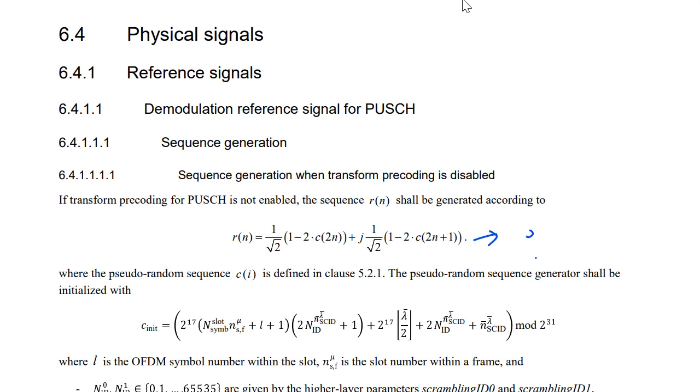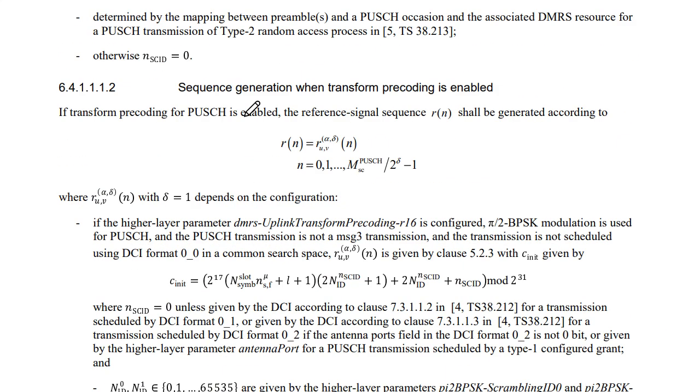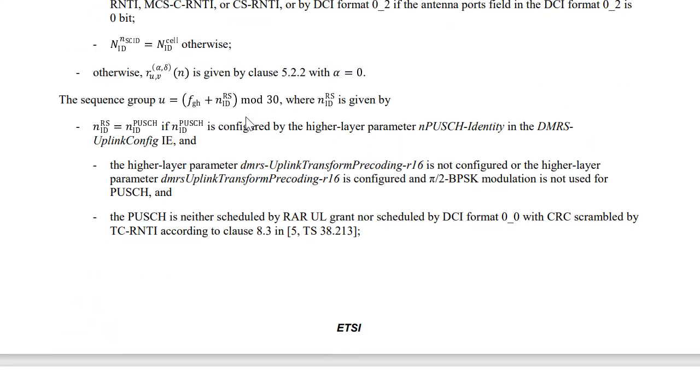This is the sequence that we are supposed to generate. If you see this one, then this can be expressed as e to the power of j phi. So these c(n) values can be generated using this subclause. I will not go through there, but if you actually go to that and try to derive the r(n), it can be expressed in terms of this, and as you can see the magnitude will be one. So we got to know how does the sequence look like. Even in fact there is another section where the transform precoding is disabled. In this case the sequence is given something like this.